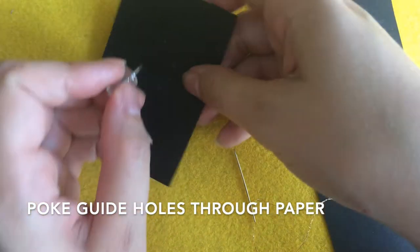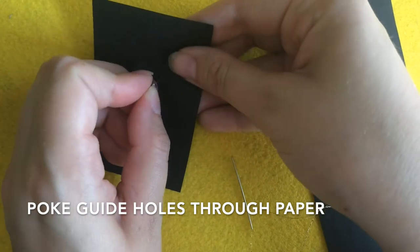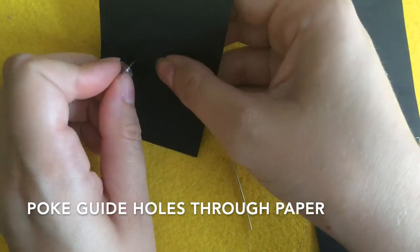Let's do some simple stars first. You're going to poke holes for each point of the star, then simply pull the thread to the opposite point, just as though you were drawing it.